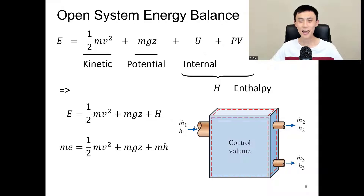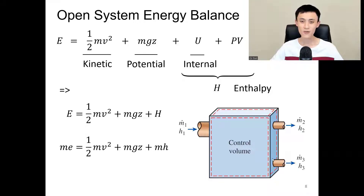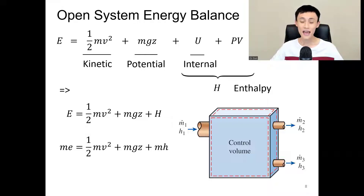For open systems we have fluid in and also fluid out, so we are going to have energy in and energy out. Our energy is going to be kinetic energy, potential energy, internal energy, and because the fluid is moving, we also need to consider pv — similar to thermodynamic work, it's because of the moving fluid. From previous classes we learned that u plus pv is enthalpy, so we use h for enthalpy. Our new energy balance is going to be: energy equals kinetic energy, potential energy, and also enthalpy — in specific energy format.